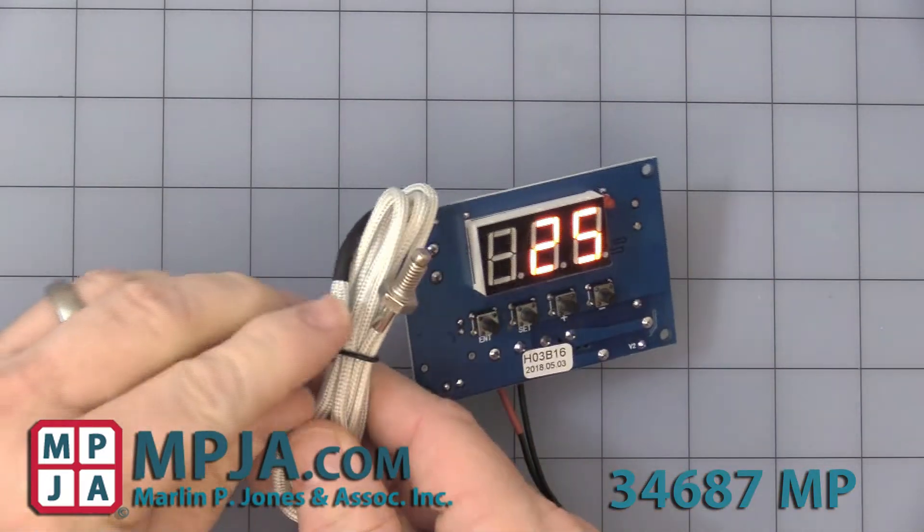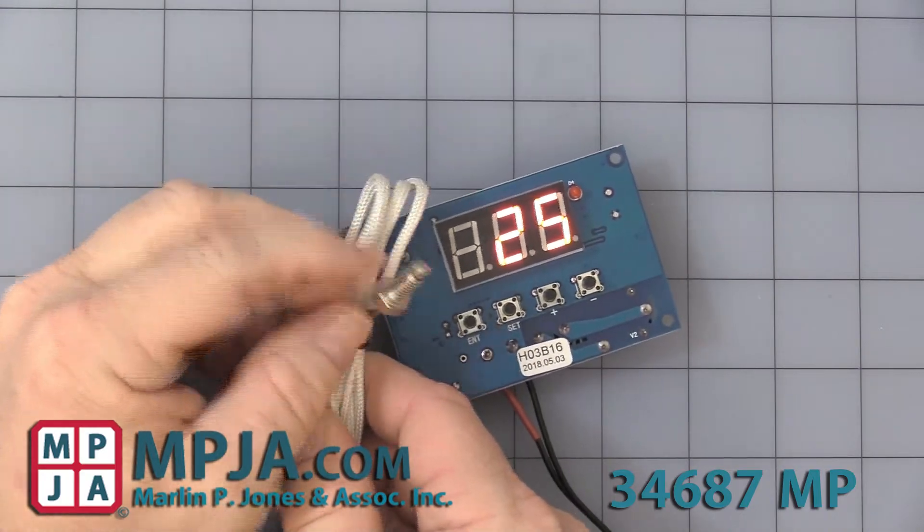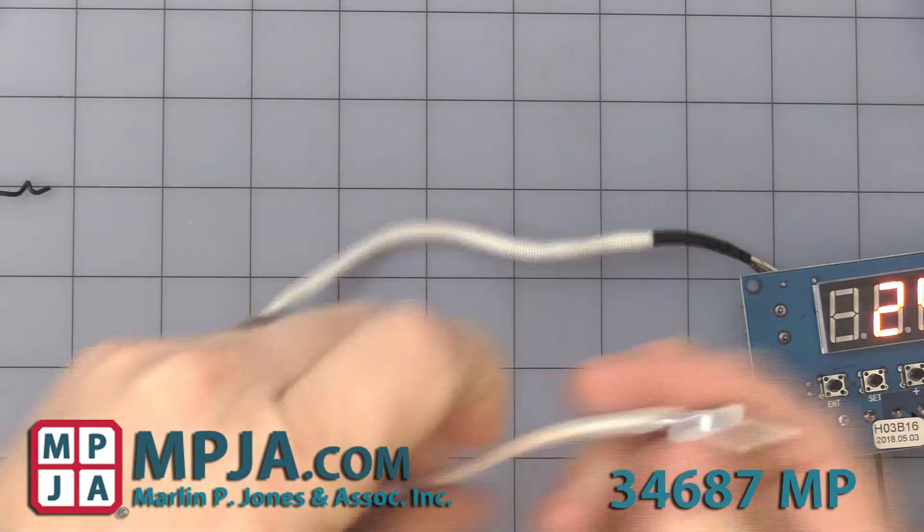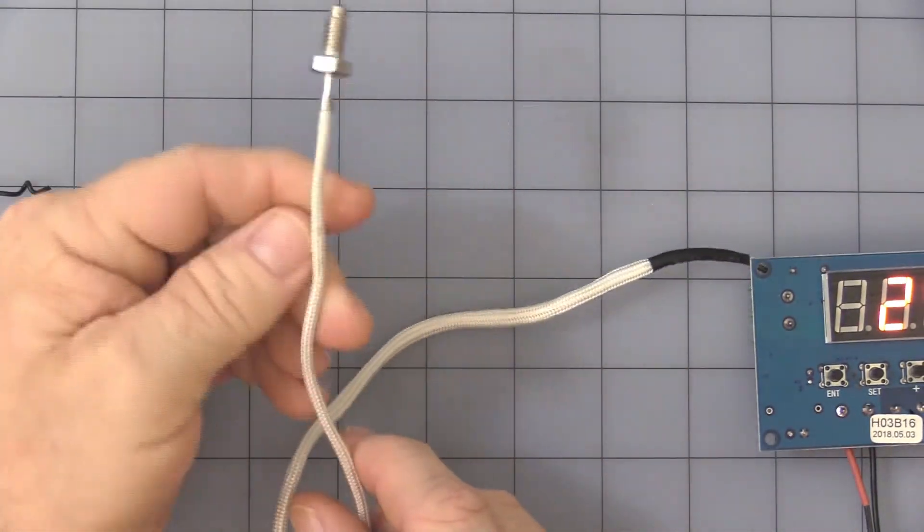It comes with a probe that's a 6mm thread by 1mm. It's about 36 inches long, high temperature fiberglass insulation to protect it.